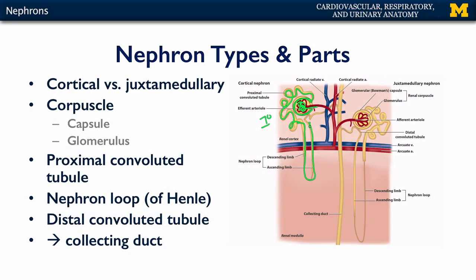Beyond the nephron loop, we have the distal convoluted tubule that feeds into the collecting duct. The collecting ducts are usually held in common between several nephrons. These descend through the cortex and end at the renal papilla, which is the point of no return for when filtrate really becomes urine.